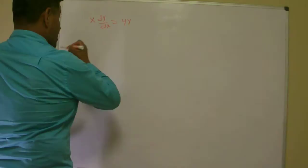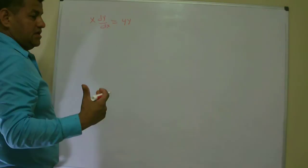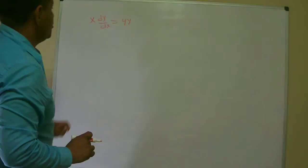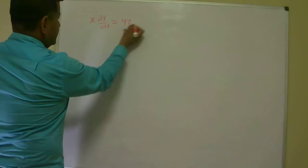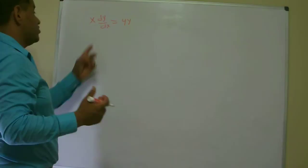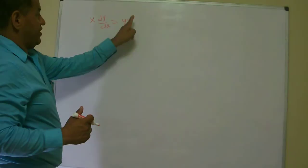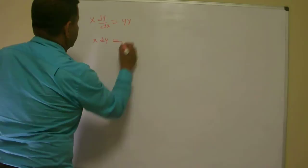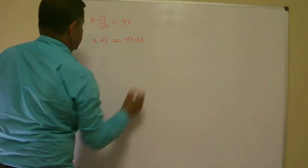So what I am going to do right here is I want to separate the variables. I want to have the dx with the dx and the dy with the y's. So I want to go ahead and cross multiply this dx with the 4y and I get x dy equals 4y dx.